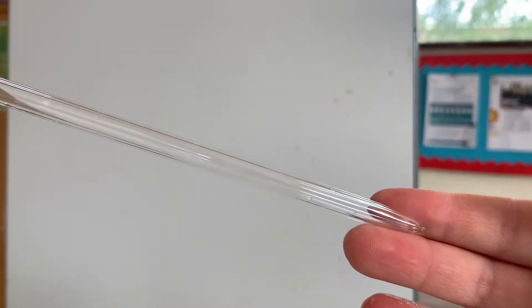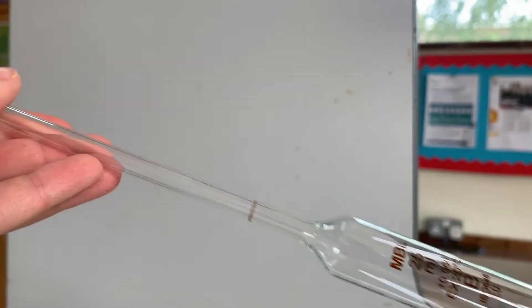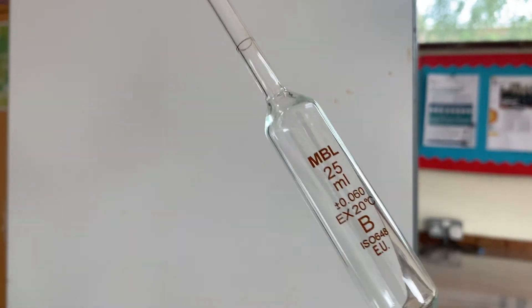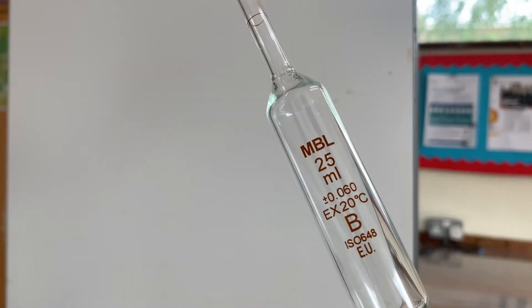First I need to measure out 25 centimetres cubed of the known concentration sodium hydroxide. I'm going to use this piece of equipment — a volumetric pipette, specifically designed to measure out 25 millilitres of liquid. You can see this pipette has a tolerance or inaccuracy range of plus or minus 0.06.